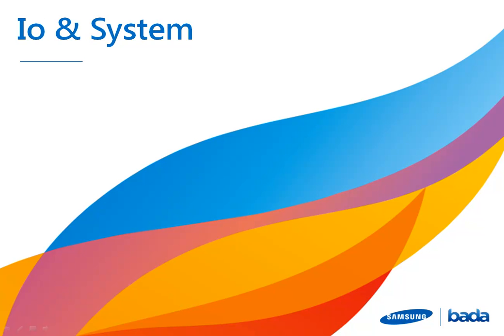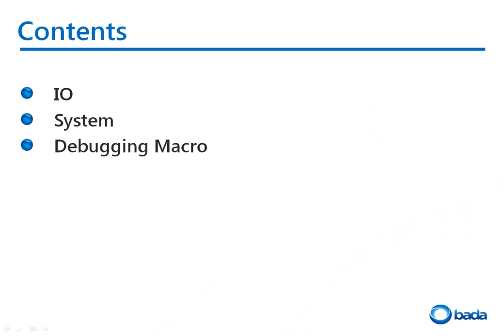I will now explain Bada's I/O and System namespace. First, let's have a look at the I/O namespace, and then the System namespace. After that, I will introduce the debugging macros which are useful when developing applications.